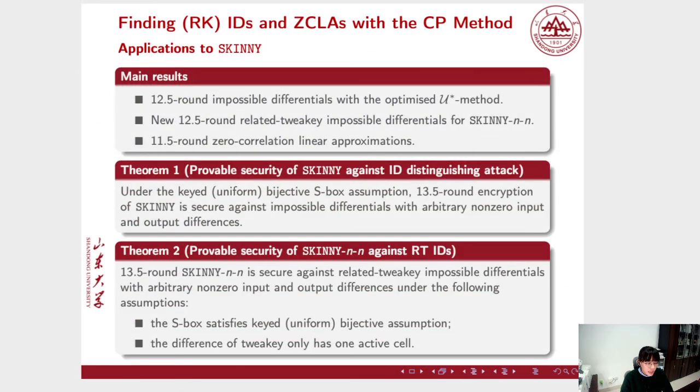These are results for the applications to Skinny. We find some 12.5 round impossible differentials, and some new 12.5 round related-2K impossible differentials for Skinny-NN, and some 11.5 round zero-correlation linear approximations. With the tool, we also prove that under a certain assumption, a 13.5 round encryption of Skinny is secure against impossible differentials with arbitrary non-zero input and output differences. Under the related-2K attack setting, we also prove a conditional provable security bound.